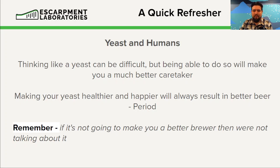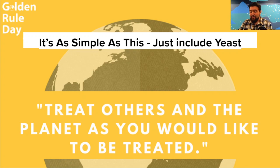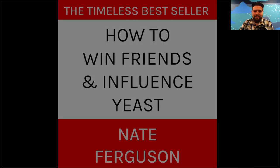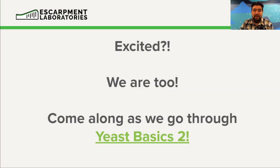That's what the Q&A is for if you want to go further. It's as simple as this — it's the golden rule: treat others as you would like to be treated, do unto others as you would want done unto you. Just include yeast. If you make them happy, they'll be happy too. You can almost think of this series as the second edition of 'How to Win Friends and Influence Yeast' — always a bestseller. And with that, that's your course introduction. I'm excited. We're going to start recording all the new lectures in the next couple of weeks, and if you want to learn more, come along as we go through Yeast Basics II. Look forward to seeing you. Cheers.